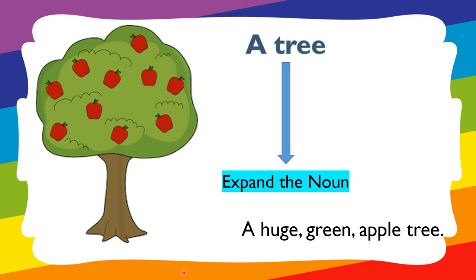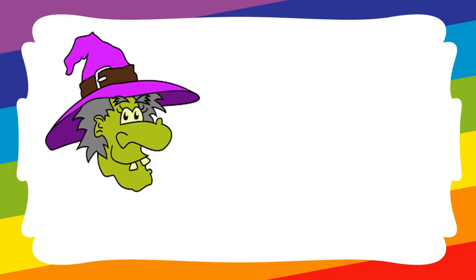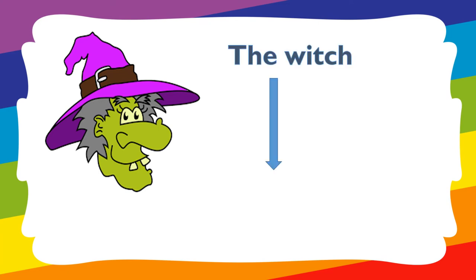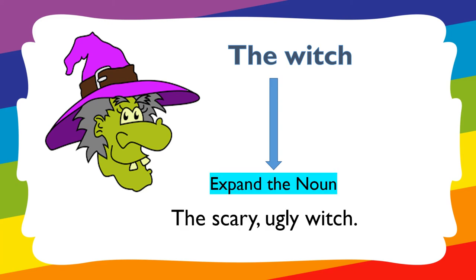We have three adjectives — 'huge,' 'green,' and 'apple' — used to describe the tree. 'A huge, green, apple tree' is now an expanded noun phrase. Next, 'the witch.' To expand the noun phrase, we get 'the scary, ugly witch.' Here we have two adjectives separated by a comma — 'scary' and 'ugly.' So 'the scary, ugly witch' is our expanded noun phrase.